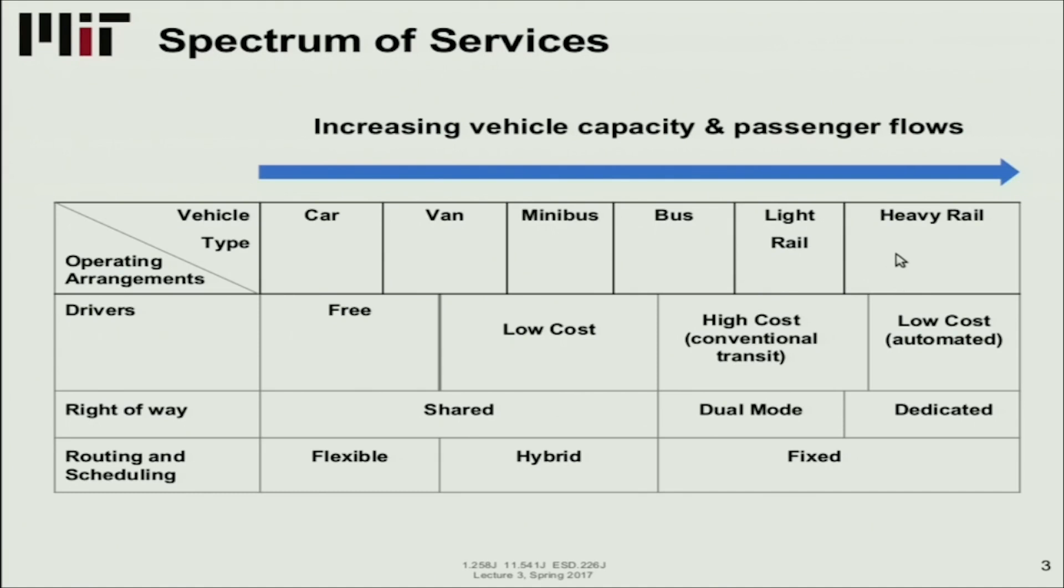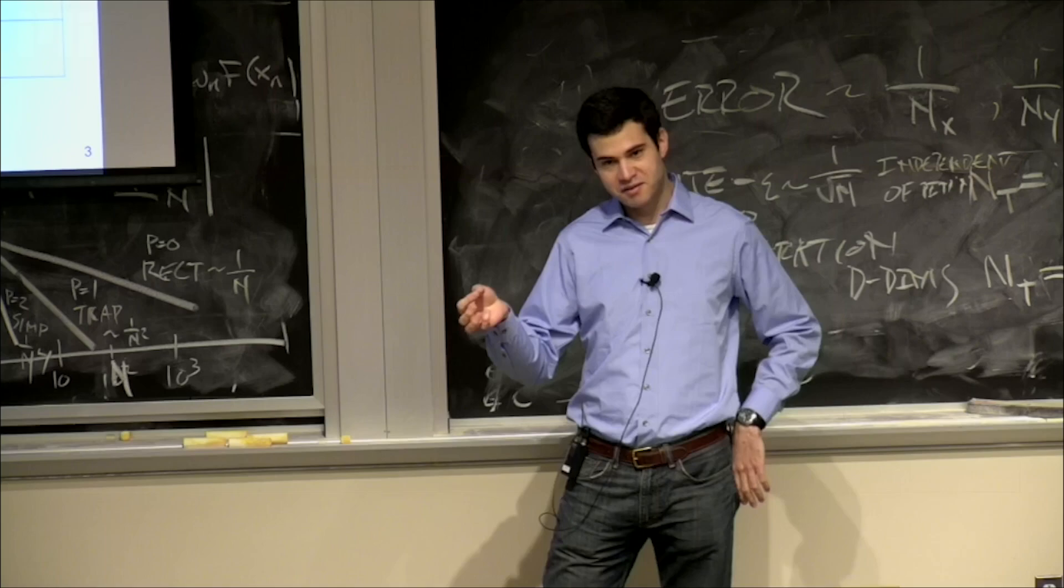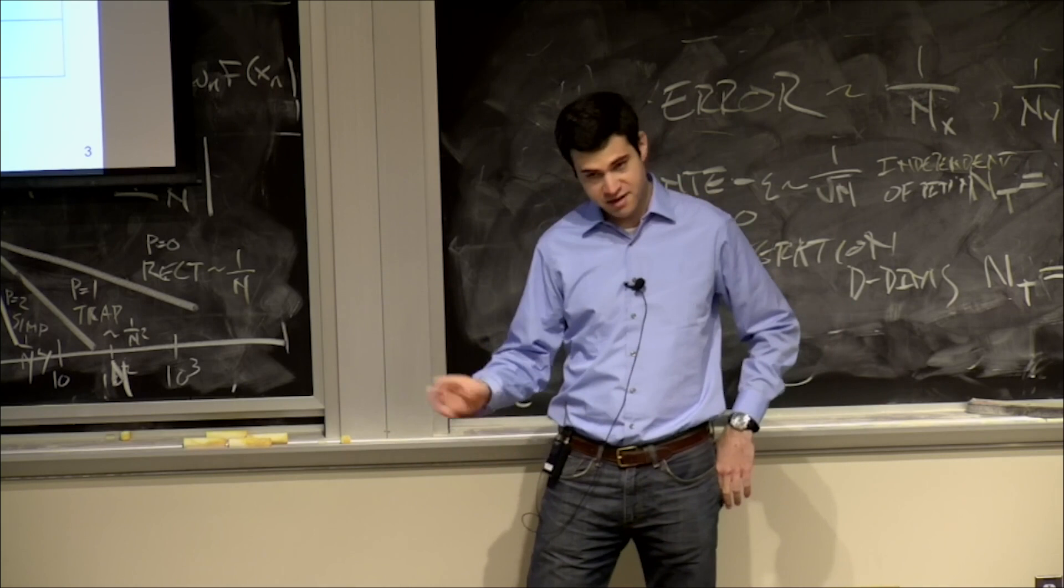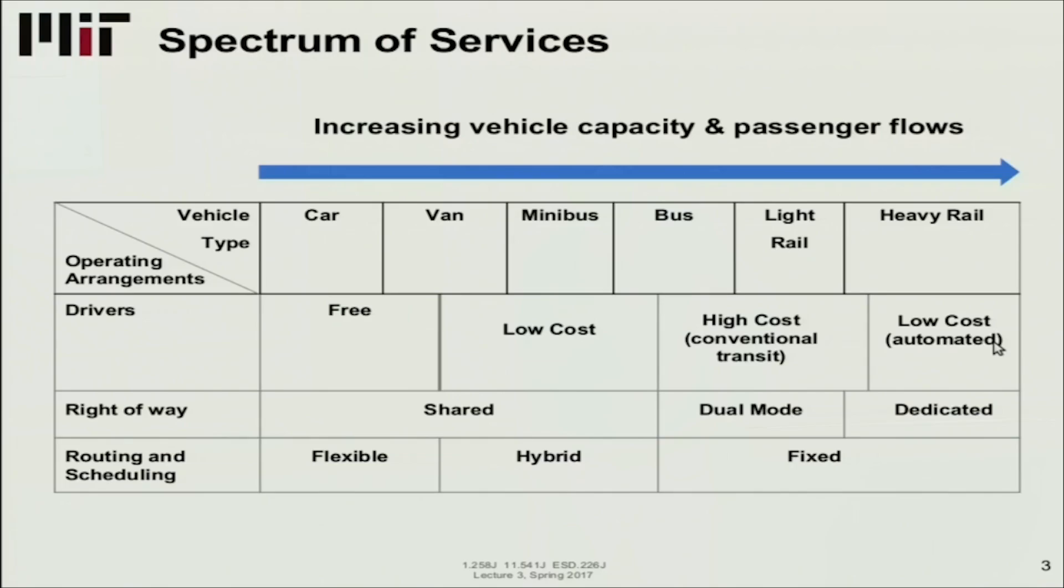But as you move towards traditional transport and labor unions, the cost starts increasing. You have higher salaries, especially as you move towards light rail and heavy rail, much higher salaries for drivers. However, when we get to heavy rail, especially the most advanced systems, a lot of these are driverless. They operate automatically. They might have attendants but don't need a driver. In the extreme, it's a robot driving the vehicle and you don't have to pay for a driver. In terms of right of way, we start with shared. Cars, vans, minibuses, and buses typically share the road with other cars. They're stuck in traffic if there is traffic.